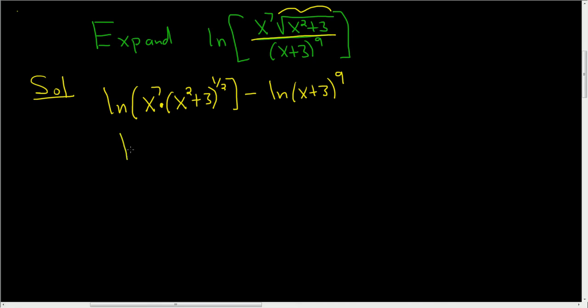So this is the natural log of x to the 7th plus the natural log of x squared plus 3 to the 1 half minus, and now we can use the power rule on this piece by taking the 9 and putting it in the front. So 9 natural log of x plus 3.